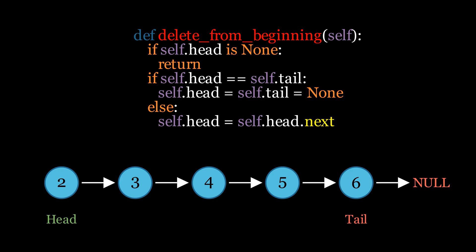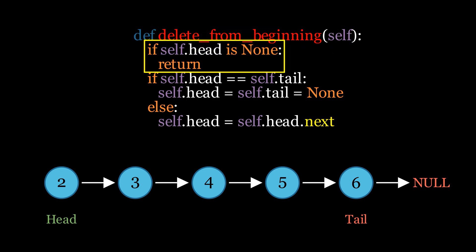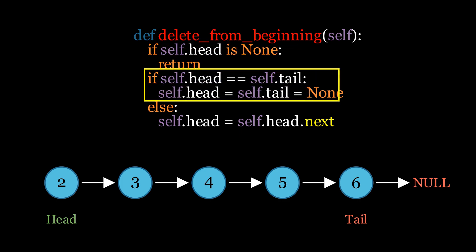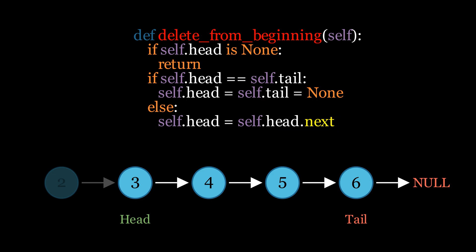Next is deleting from the beginning of the list. The algorithm first checks if the list is empty; if so, the function simply returns. If not, it checks if head and tail point to the same node, meaning the list contains only one element, and sets both to None. If the list has more than one element, the algorithm moves the head pointer to the next element. Since we are using Python, we don't need to manually delete the first element because Python handles memory management automatically. However, in languages like C++, you would need to explicitly delete the node to free up memory.